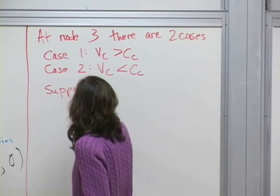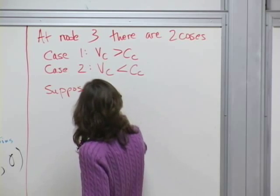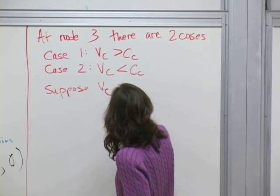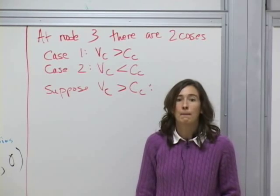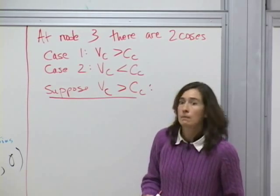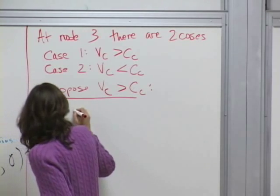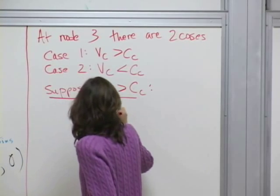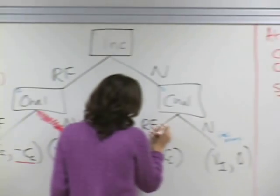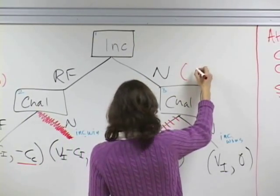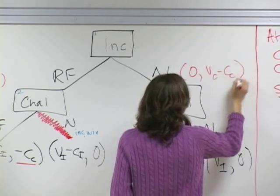Once you define the cases, you go forward and analyze each case separately. Suppose we're in case one—VC is greater than CC. Then at node three, the challenger should raise funds. We're now in the case we had with the game using specific numbers. The strategic equivalent here is zero and VC minus CC. What happens at node one? It depends again.